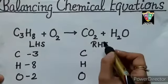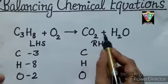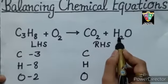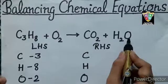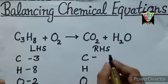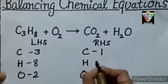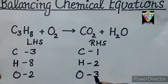Now check for RHS. On RHS, we have 1 carbon atom, 2 hydrogen atoms and oxygen here 2 and here 1. That means total 3 oxygen atoms. So for carbon, write down 1, hydrogen 2 and oxygen 2 plus 1, 3.